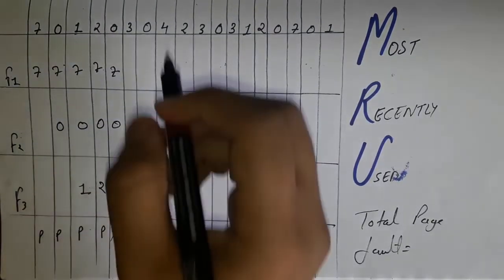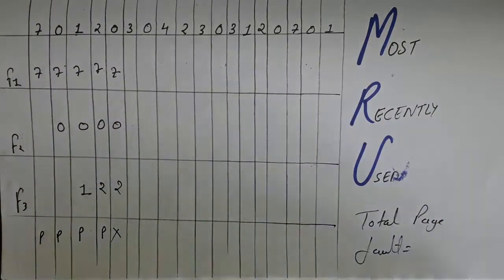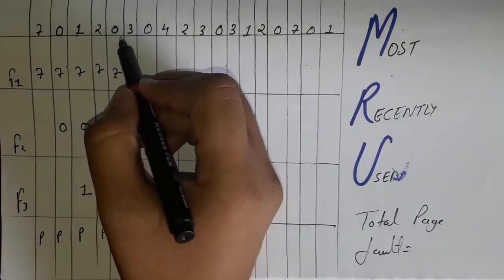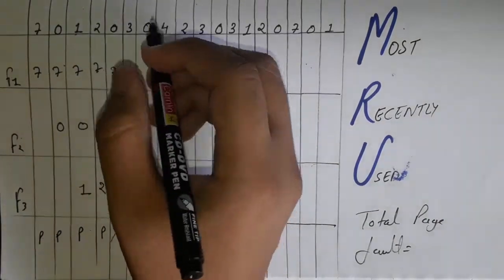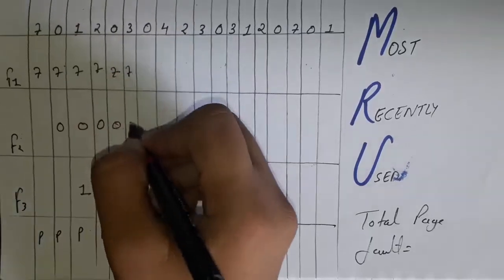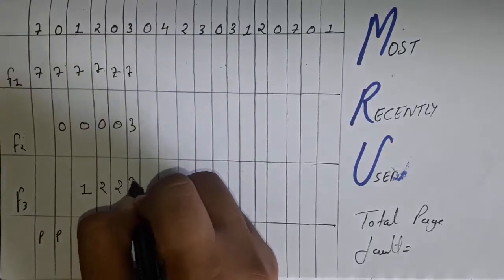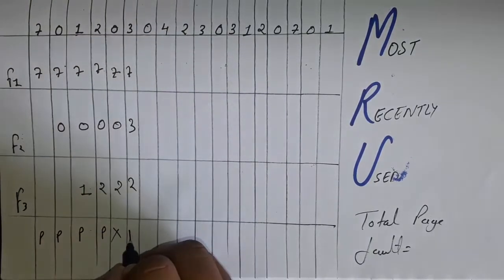Then process 3 arrives. Because we have just used page 0, we have to remove 0. Write 7, 3, 2 and mark the page fault.